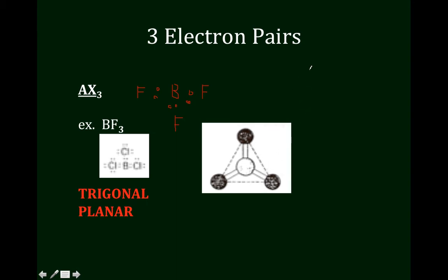If I was drawing it as a structural diagram, I would do something like this. I'd go B to an F, and then I'd go to another F, and I'd go to another F. That's how you're supposed to show that it's planar. Planar means it's flat, like lying on a table. Trigonal means we'd enclose it with a triangle with 120 degrees between each.